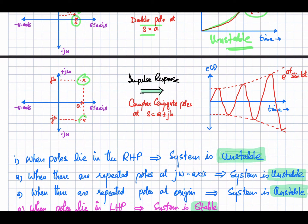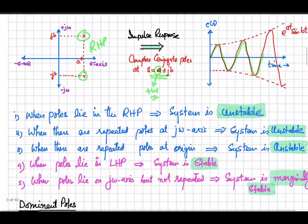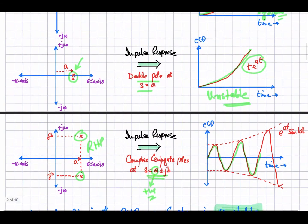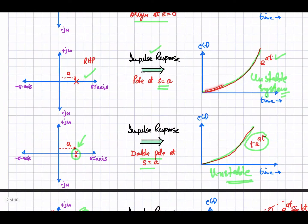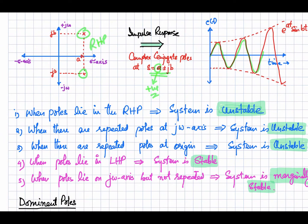If we have complex conjugate pairs of poles in the right half plane, the pole position is a plus or minus jb with a positive real part. The impulse response grows as e raised to the power at with oscillations — the magnitude increases with time so there is no bounded output. We can conclude that when poles lie in the right half plane — whether a single pole, repeated pole, or conjugate pair — the system is unstable.